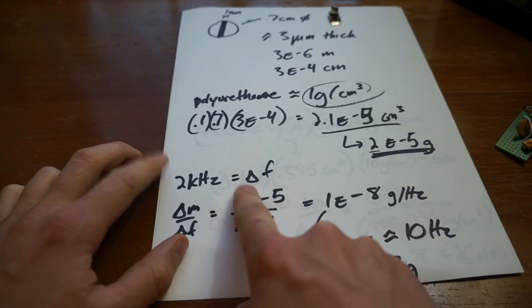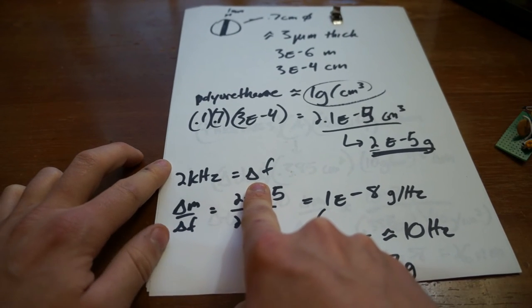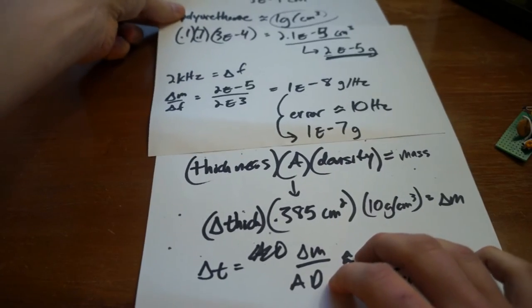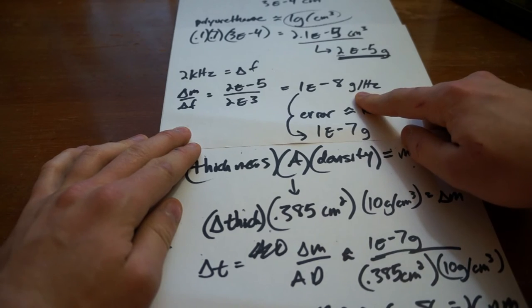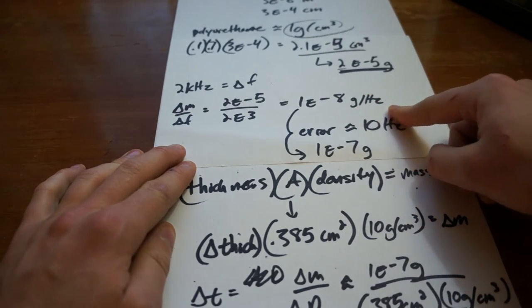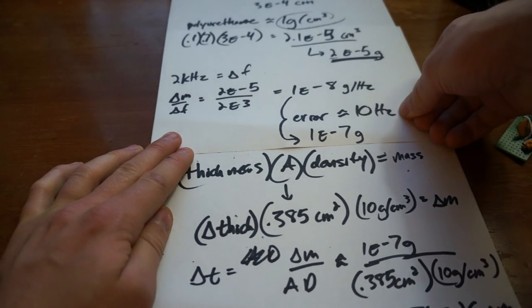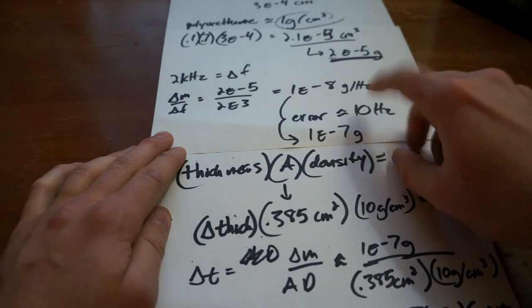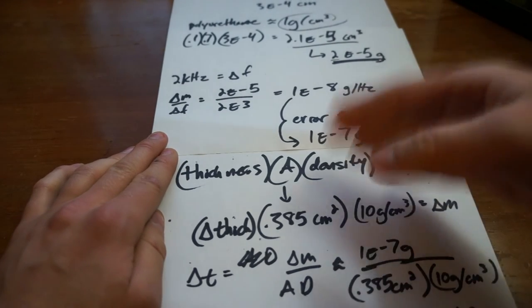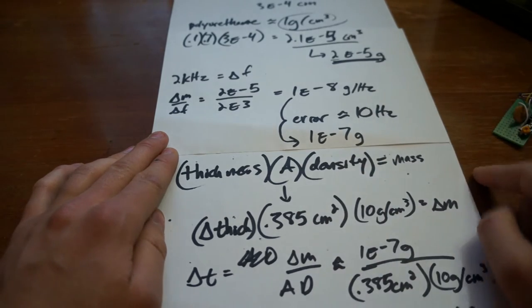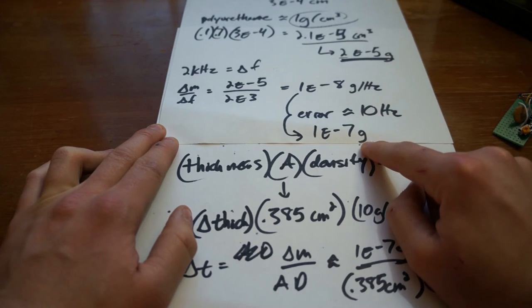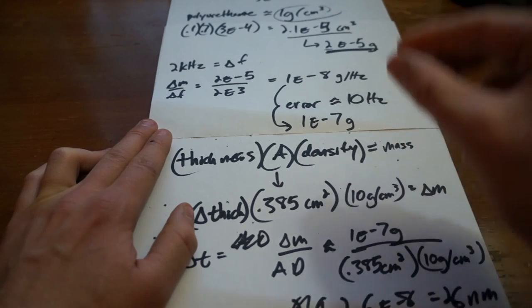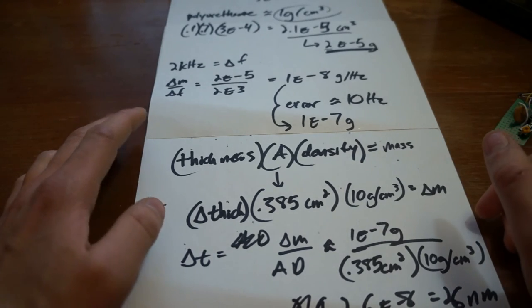We were seeing changes of approximately 2 kilohertz, between 1.5 and 3 kilohertz change in frequency for that given change in mass. Then we can do Δm over Δf and see our sensitivity. Our sensitivity is 1×10⁻⁸ grams per hertz. If we say there's an error of like 10 hertz, just inherent noise in the frequency counter and the oscillator, then we multiply the 10 hertz error by the sensitivity, and so 1×10⁻⁷ grams—that's the smallest change in mass that we can measure, the smallest Δm.